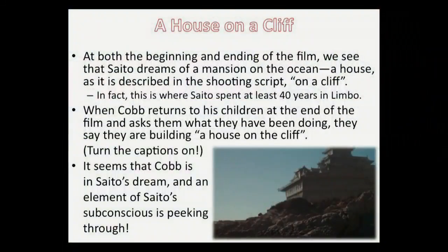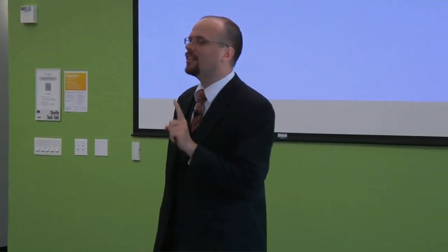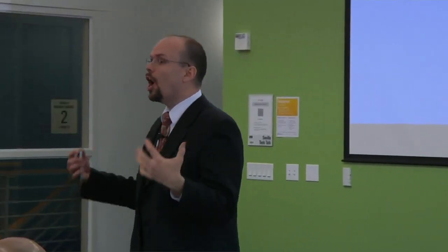Another subconscious element has worked its way through. Both at the beginning and ending of the film, we see that Saito dreams of a mansion on an ocean, a house on a cliff. When Cobb returns to his children at the end of the film and asks them what they have been doing, they say they are building a house on a cliff. Turn the captions on and you'll see it right there in black and white. It looks like a subconscious element of Saito working its way through into the dream that is at the end of the film.